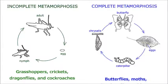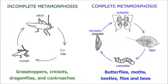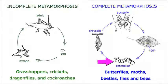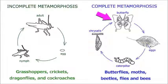Butterflies, moths, beetles, flies, and bees have complete metamorphosis. To grow into an adult, every butterfly goes through these four stages: egg, larva, pupa, and adult. Each stage looks completely different and serves a different purpose in the life of the insect.